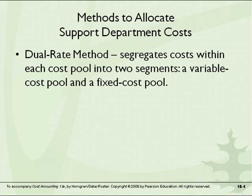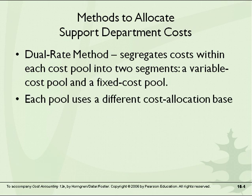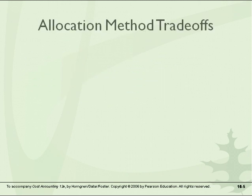There's also a dual rate method where there's a segregation of costs within each cost pool into variable costs and fixed costs, and then they get allocated differently. Each one would use a separate cost allocation base.